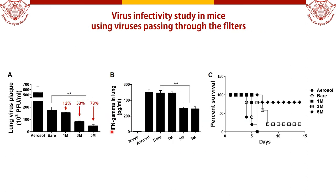As a result of testing by infecting mice with the virus that passed through the filters, the virus titer and inflammatory reactions in the lungs were significantly reduced. The survival rate increased in the salt-coated filter groups.